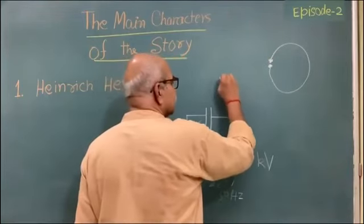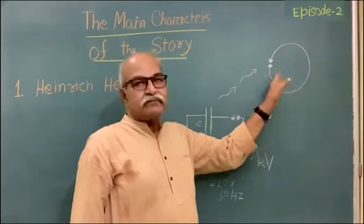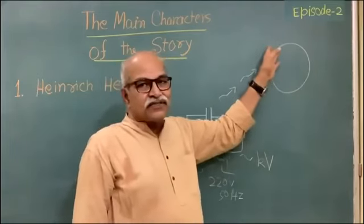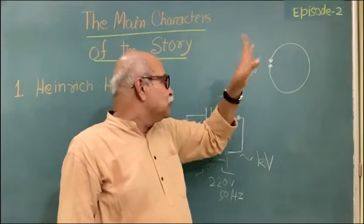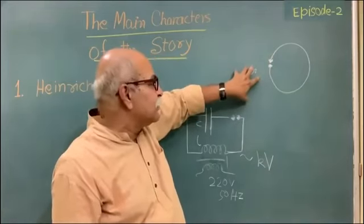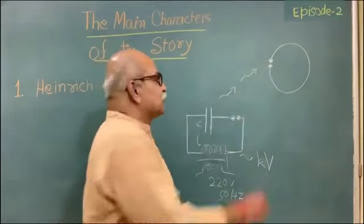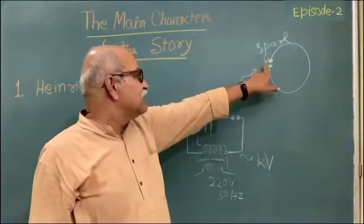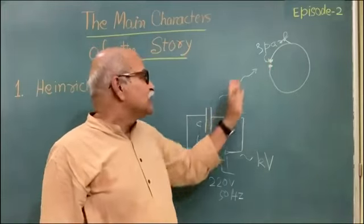If the wave is generated and reaches this receiver, the wave creates oscillation here — creates EMF here, tries to create currents in this loop, but the loop is also broken. The same mechanism: if you have some potential difference generated here because of the EM wave, that potential difference may lead to a spark here. So if you have a spark here, that means the wave has reached the receiver — that is the detection of the electromagnetic wave. You generate it, and you detect it.